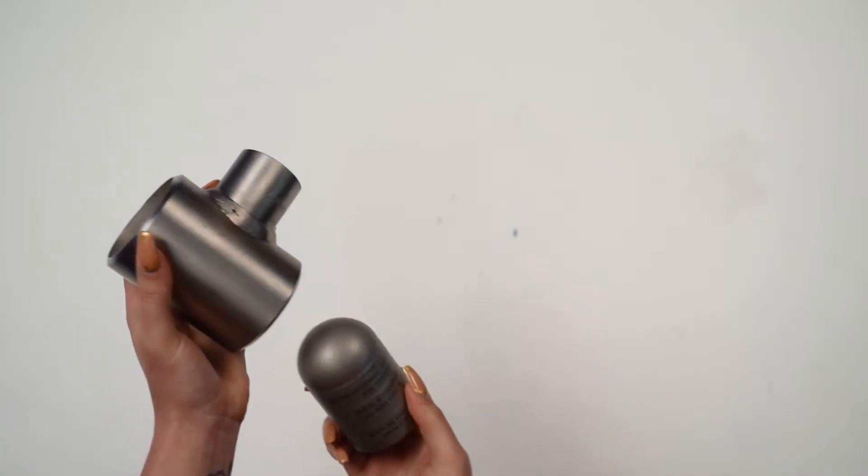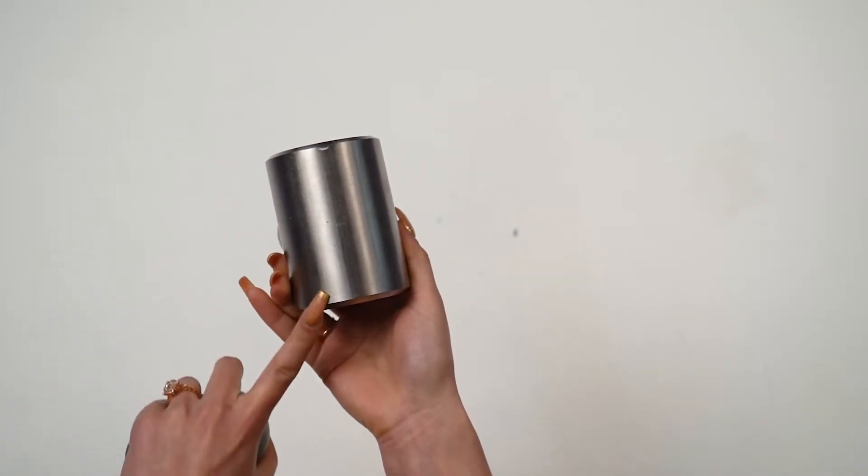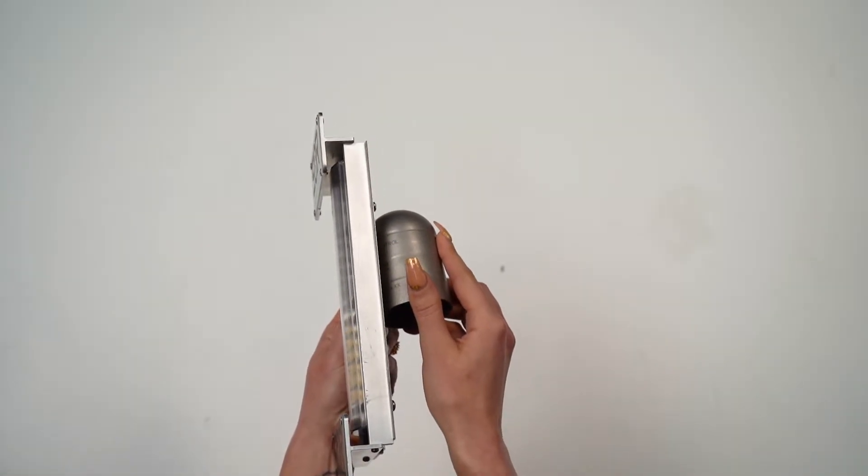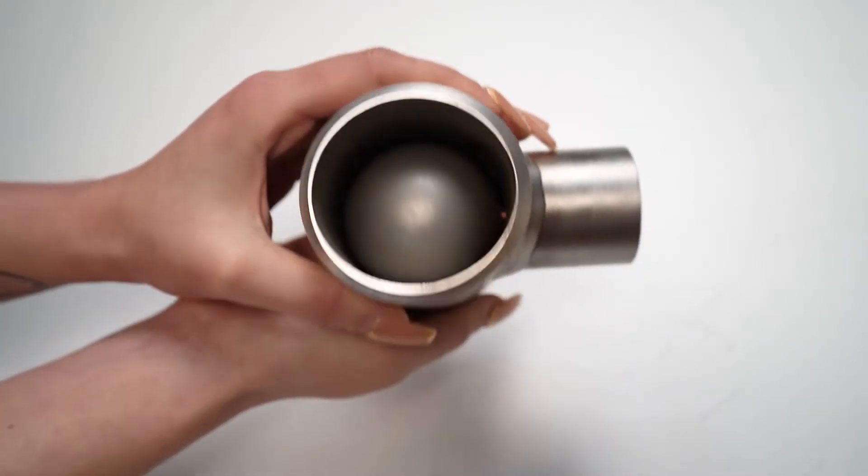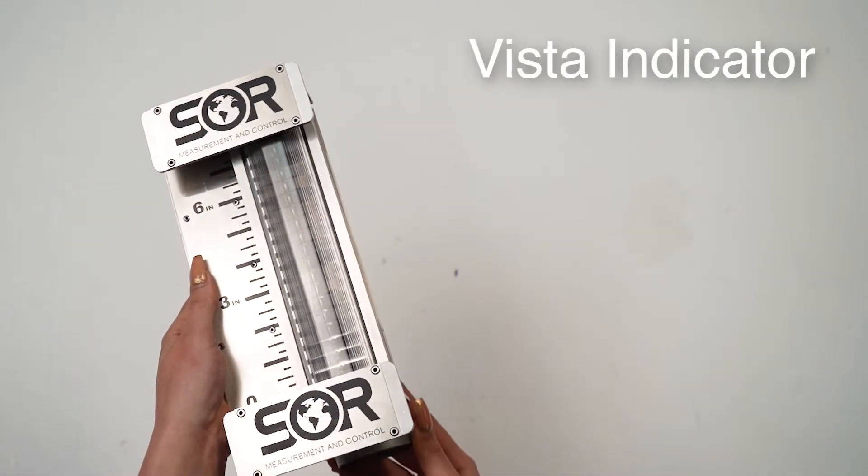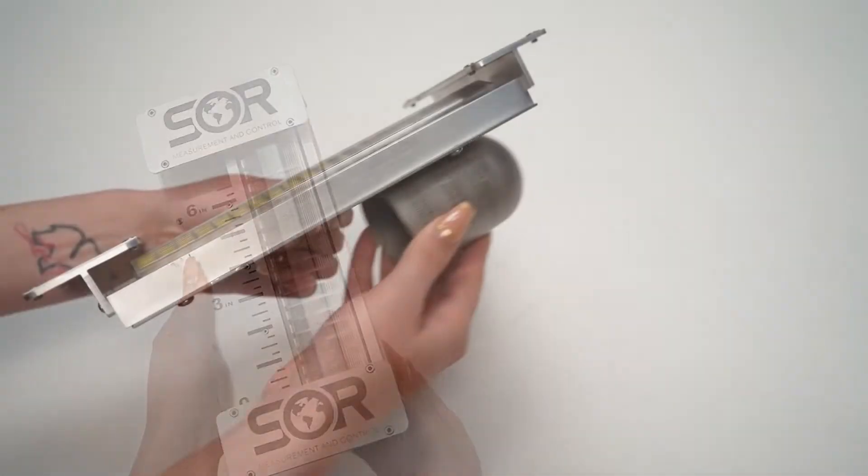The float resides inside the chamber and rides with the liquid. As the float rises, the magnets on the inside interact with the magnets on the flags within the indicator causing them to rotate and show the process level inside the chamber. The process fluid never touches the indicator. SOR has a patented vista indicator which allows a 200 degree viewing angle, the best in the industry.